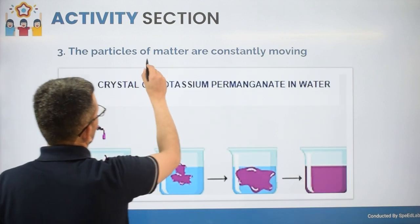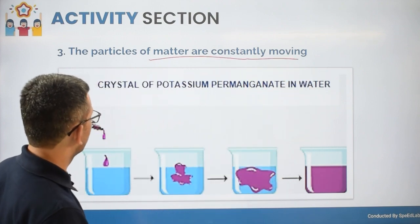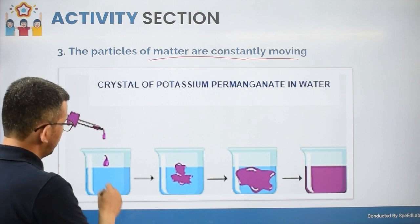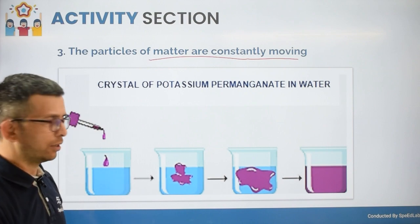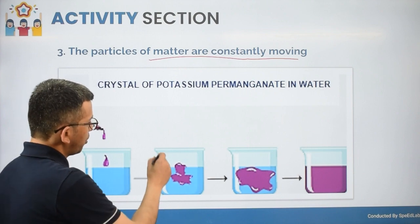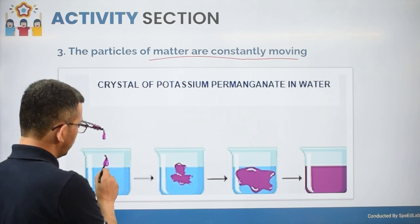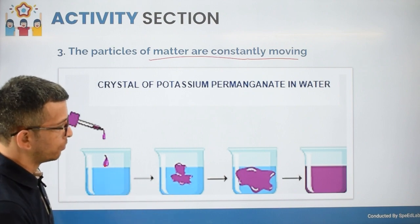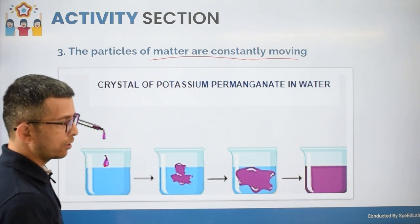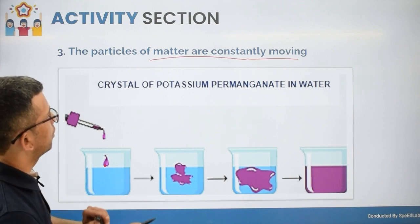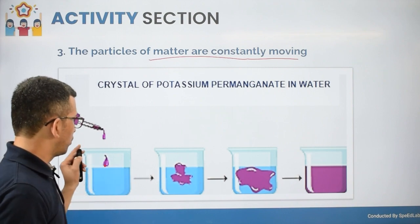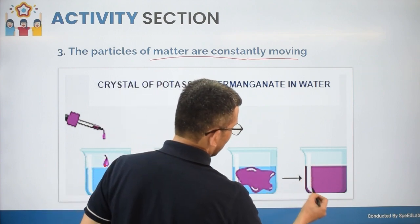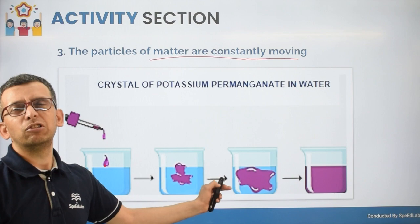To show that particles of matter are constantly moving, take a concentrated solution of potassium permanganate and add it to a beaker filled with water. At the point of interaction, the KMnO4 drop spreads and gradually occupies all the water in the beaker. This clearly shows that particles of matter are constantly moving — the KMnO4 particles move and spread throughout the water.